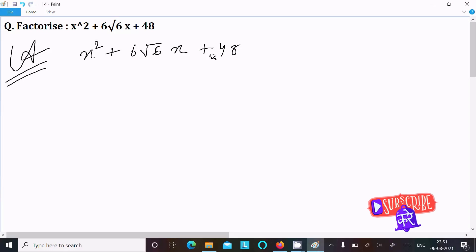We can easily achieve the output. First, multiply the first term with the last term: x² into 48, which comes to 48x². Now, take the middle term.